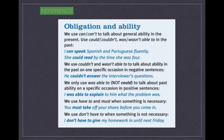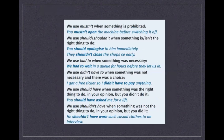We use have to and must when something is necessary: 'You must take off your shoes before you come in.' We use don't have to when something is not necessary: 'I don't have to give my homework in until next Friday.' We use mustn't when something is prohibited: 'You mustn't open the machine before switching it off.' We use should or shouldn't when something is or isn't the right thing to do: 'You should apologize to him immediately. They shouldn't close the shop so early.'